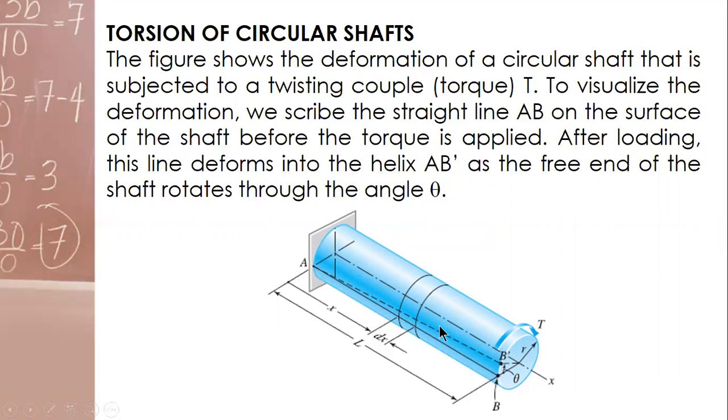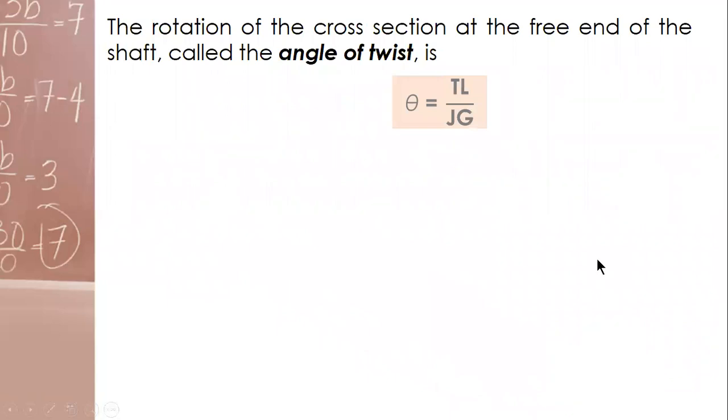So obviously the length of EB prime is bigger than EB. So the change in length is the elongation or deformation, and we can get the strain and everything. After all considerations, calculating the deformation and then shear strain and then Hook's law application, we arrive at an expression, a final expression for the angle of twist.